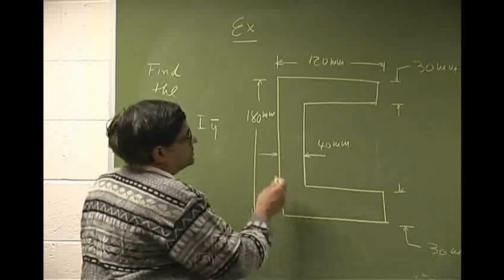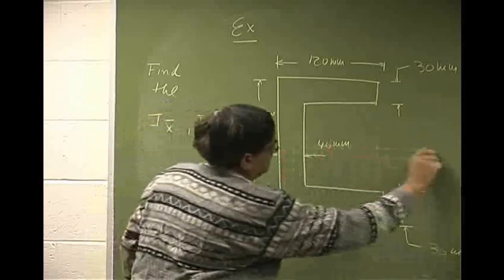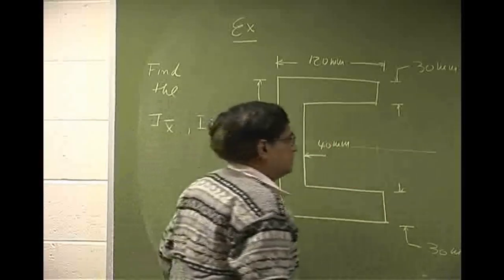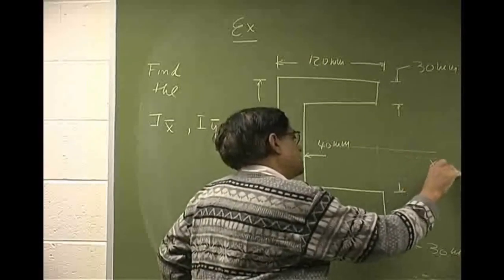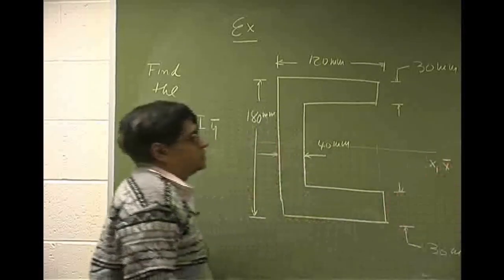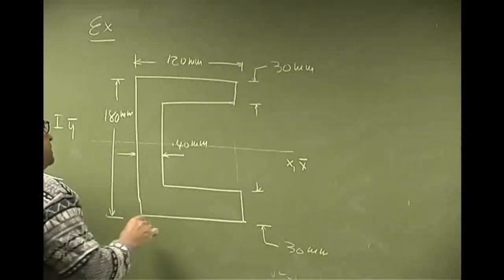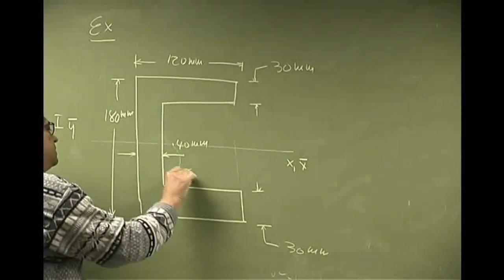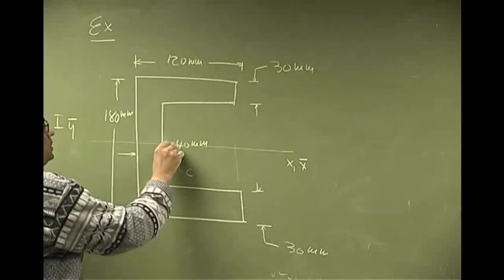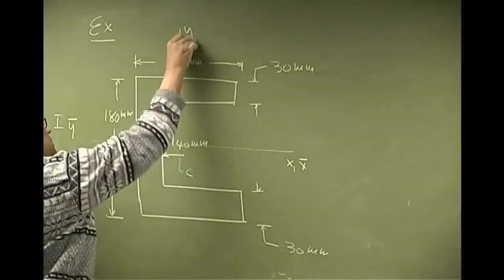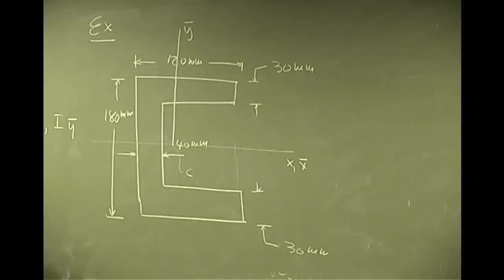So first of all, this thing is symmetric. It is cut right in the middle. And your x-axis and x-bar will be the same. Then the centroid, let's say, comes out here. Then you can place an axis here. This is going to be y-bar.